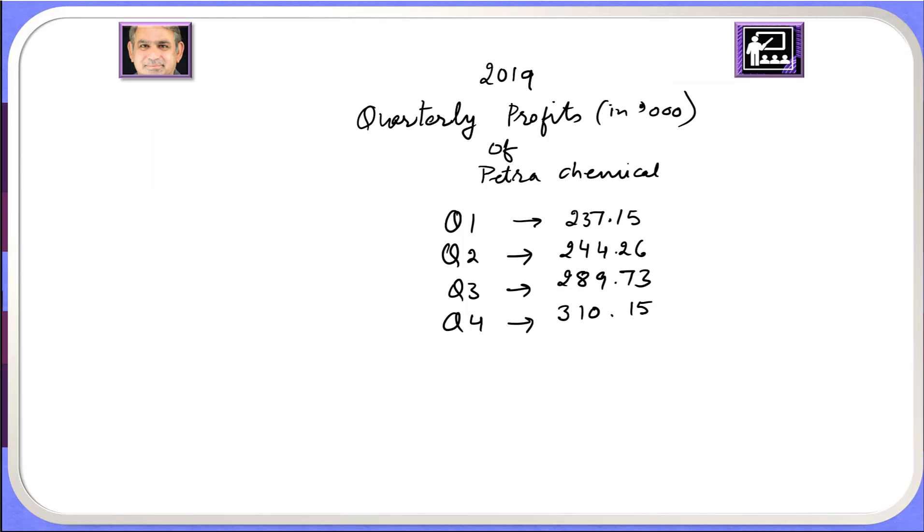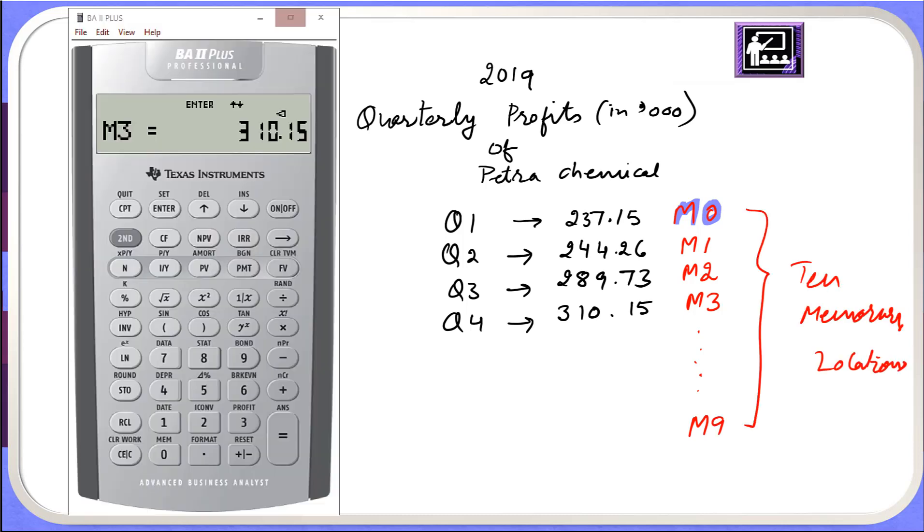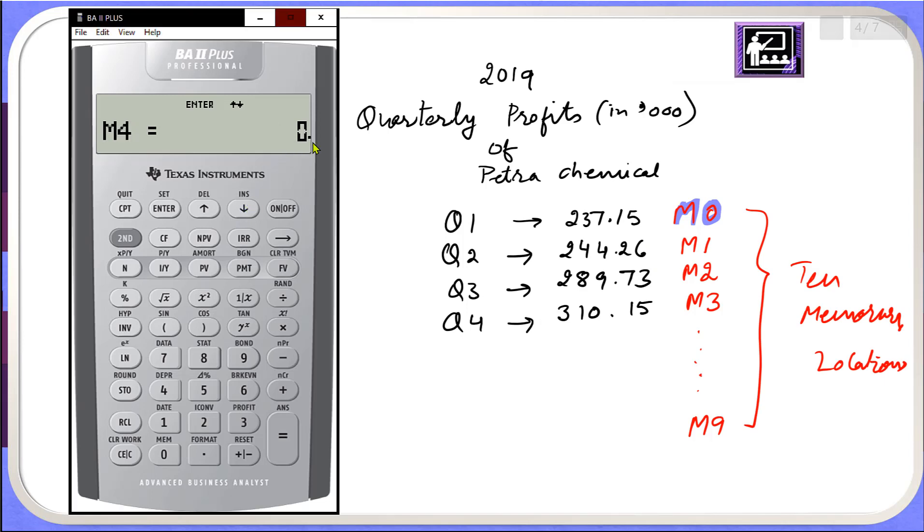So M memory locations are M0, second memory location is M1, third memory location is M2 and fourth memory location is actually M3. So this way there are total up to M9 but there are 10 memory locations. Let's continue scrolling M4 0.